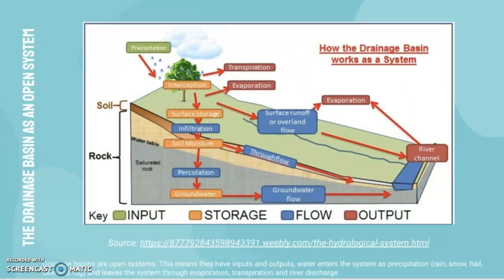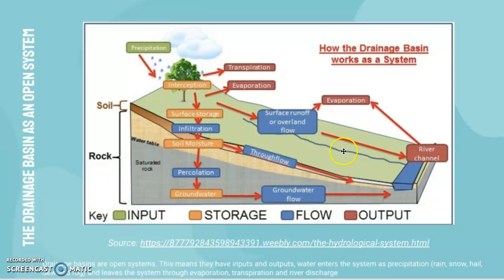To summarize: why is the drainage basin an open system? It has inputs and outputs — water enters the system as precipitation and leaves through evaporation, transpiration, and river discharge. Because it has inputs, stores, flows, and outputs, it is a continuous open system.